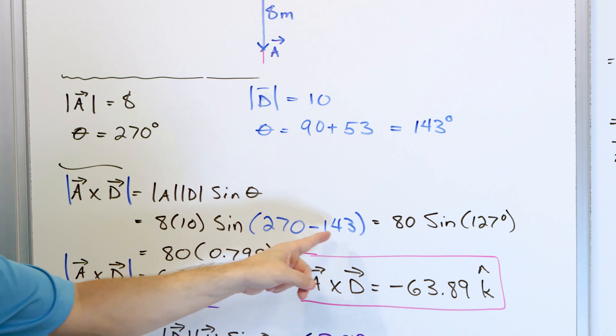Now let's do D cross A using the determinant method as well. The matrix is the same, but with the rows swapped: row I, J, K; then D: negative 7.99, 6.02, 0; then A: 0, negative 8, 0. This matrix is the same as before with the two vector rows flipped — that's the only difference. Let's take the determinant.